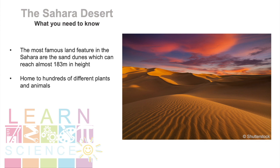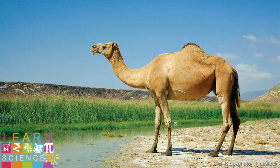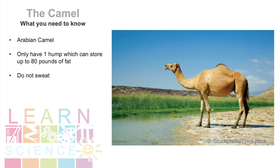Do you know what animal this is? That's right, it's a camel. The camels that live in the Sahara are more specifically known as Arabian camels. They only have one hump which can be seen here. This hump can store up to 80 pounds of fat which can be broken down into water and energy for the camel to use when these things are not available in the environment. This is one of the many ways in which these animals have adapted to live in desert conditions. Another trick the camel uses to save water is that they do not sweat even though it is really hot in the desert.